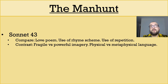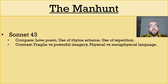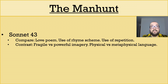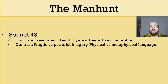Both poems are love poems whose rhyme schemes could be seen as symbolising the relationships that they depict. In The Manhunt, the weakening then strengthening rhyme scheme could be reflective of Eddie and Laura's relationship as they deal with his PTSD. In Sonnet 43, the ever-so-slightly imperfect rhyme scheme could mirror that Barrett Browning was not used to such intense and perfect love.